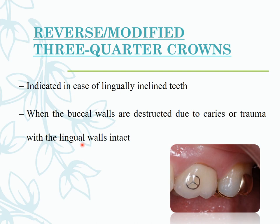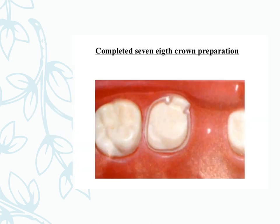The reverse modified three-quarter crown is indicated in lingually inclined teeth and when the buccal wall is destroyed by caries or trauma while the lingual wall remains intact. The seven-eighth crown preparation leaves only one portion of the tooth intact and is used in similar situations.